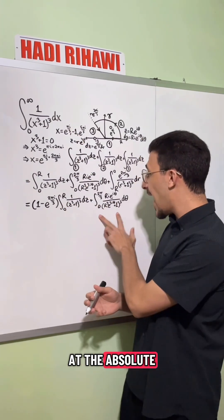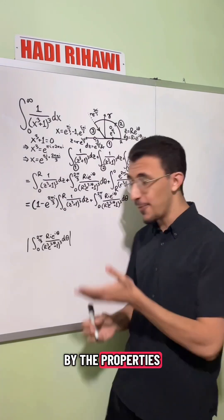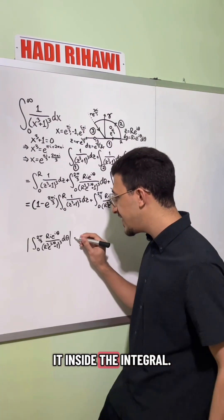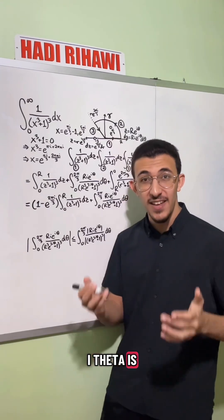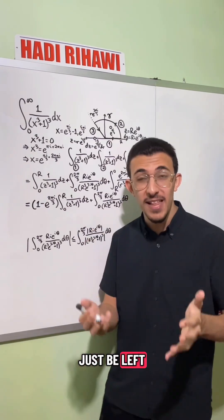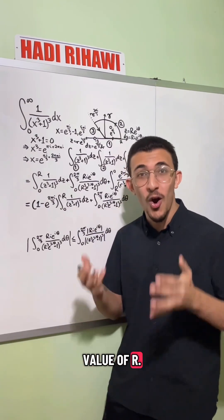So to get that, let's look at the absolute value of this integral. By the properties of the absolute value, we could bring it inside the integral. And we have the absolute value of i times e to the i theta is just one. So that'll go away. And we'll just be left with an r up top. Absolute value of r, but r is positive.